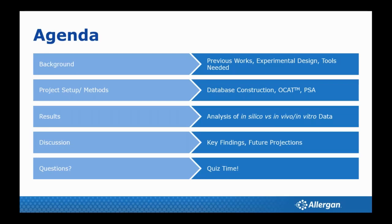Then I'll jump right into the methods that we use. I'll talk about the ocular compartmental absorption and transit program — OCAT — which is a commercially available module within a software called GastroPlus from Simulations Plus Corporation. That's our main tool used in the generation of this ocular biopharmaceutical classification model. The results I'll show are abbreviated because I'm going to roll out more results in March, but I'll give you a nice flavor of what I'm going to be talking about.